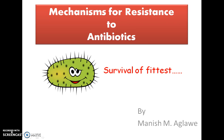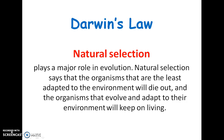Darwin's law states that organisms least adapted to environmental changes will die out, while those that evolve and adapt to their environment will keep on living. This is called natural selection, which plays a major role in evolution. The same principle applies to the development of resistance to antibiotics, where bacteria adapt against the environment — chemicals in the form of antibiotics.